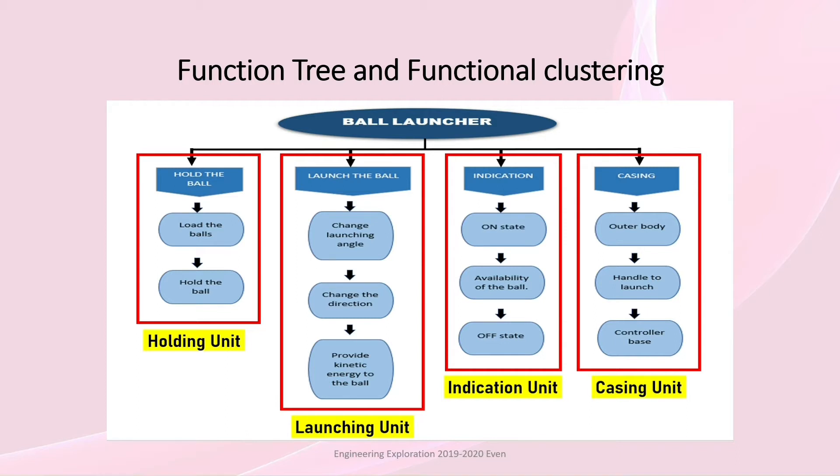Indication is shown in 3 ways: On State, Availability of the Ball, and Off State. Casing is done for Outer Body, Handle to Launch, and Controller Base.